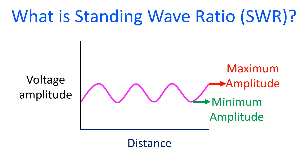The ideal SWR is 1, and a high SWR above 2 can cause heating of the transmission line and the final power amplifier of the transmitter circuit, and is likely to cause severe damage.